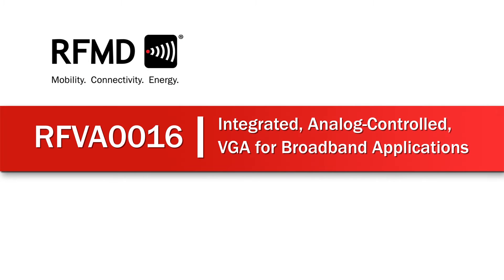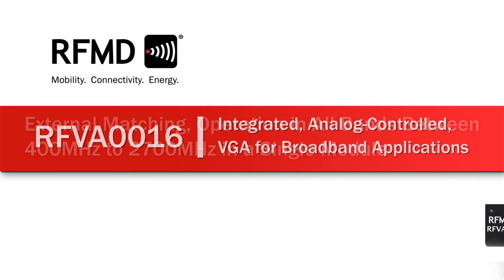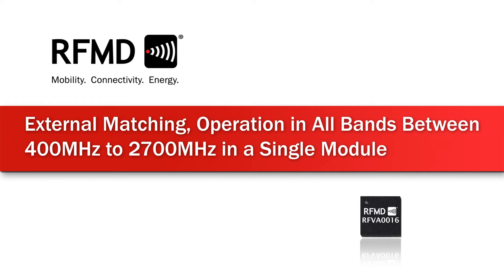RFMD's new RFVA0016 is an integrated, analog-controlled variable gain amplifier for broadband applications with external matching, allowing operation in all bands between 400 to 2700 MHz with a single module.